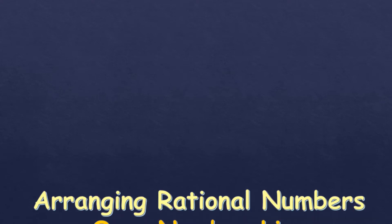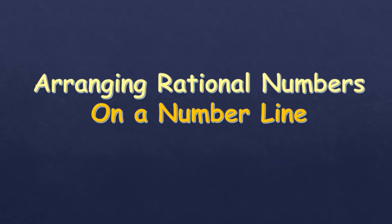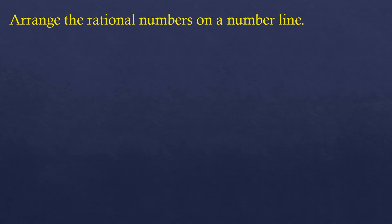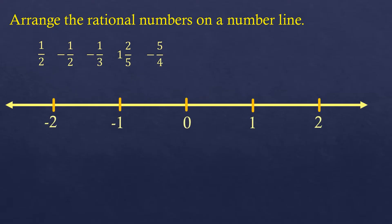In this video, we're going to talk about arranging rational numbers on a number line. We have these rational numbers: 1 half, negative 1 half, negative 1 third, 1 and 2 fifths, and negative 5 fourths. And we're going to arrange them on this number line.